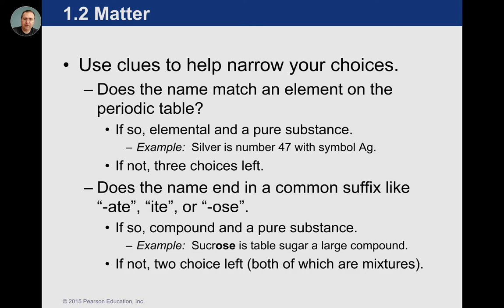Another thing to look for, for certain examples of compounds in particular, are suffixes like -ate, -ite, or -ose. Anytime you see an -ate, -ite, or even an -ide, many times those are compounds where you have a metal and a non-metal, or lots of non-metals together — as is the case for carbohydrates that tend to end in -ose. Anytime you see a recognizable suffix, you can sometimes get a clue very quickly that it could be a compound, and definitely not an element, which tends to end in -ine or something of that nature.